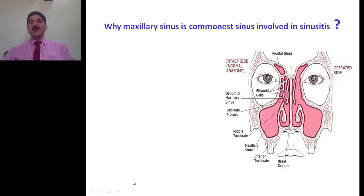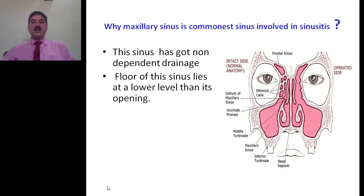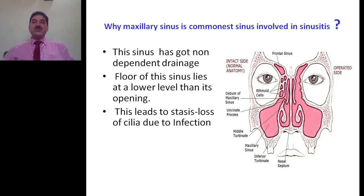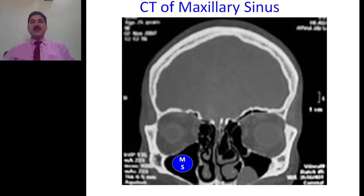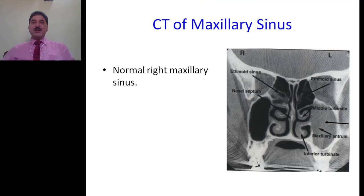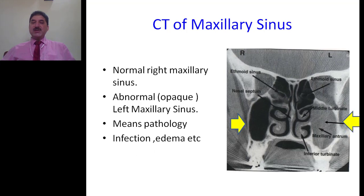Why is the maxillary sinus the most common sinus involved in sinusitis? As already said, the sinus has non-dependent drainage — the floor of the sinus lies at a lower level than its ostium or opening. This leads to stasis, which leads to loss of cilia due to infection. Inflammation of the mucosa is called sinusitis. On a CT scan, the right maxillary sinus appears normally lucent, while the left maxillary sinus appears opaque. Opacity means there is some pathology in the left maxillary sinus — this may be due to infection and edema, which appears as an opacity on CT of this sinus. N represents the normal sinus, while O represents opacity, which can be due to infection or edema.